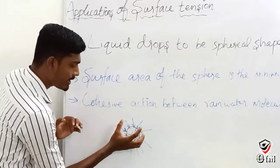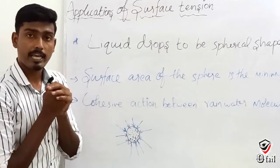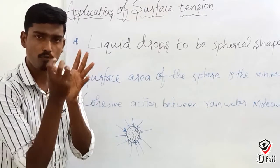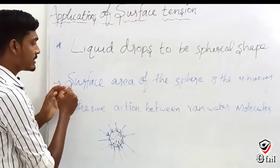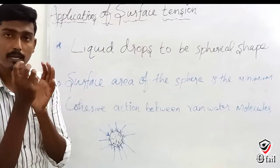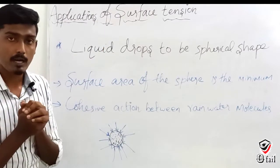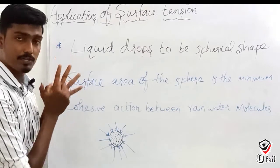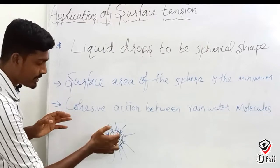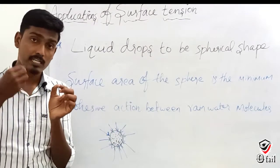All water molecules come together and form a shape with minimum surface area. The sphere has the minimum surface area, so raindrops look like a sphere shape. Due to the cohesion force between water molecules, raindrops take a spherical shape — that's great science!